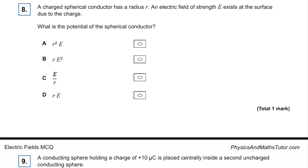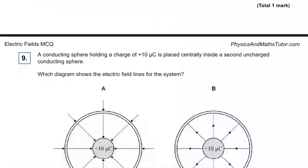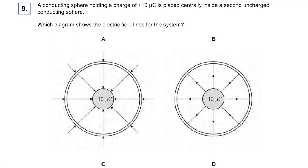Question eight: a charged spherical conductor. What is the potential? We know field strength equals KQ over R², and potential equals KQ over R. So we're looking for potential, which is just field strength times R. The answer is D. I've got a really good video about all of the equations linking together — check out my fields playlist.